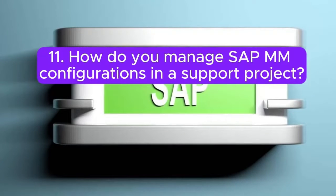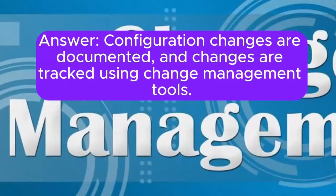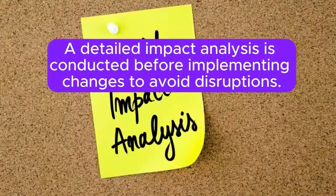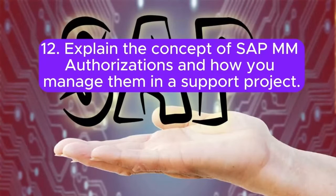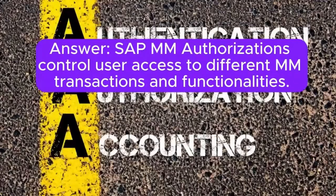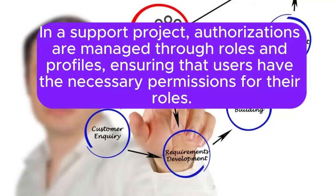Question 11: How do you manage SAP MM configurations in a support project? Configuration changes are documented, and changes are tracked using change management tools. A detailed impact analysis is conducted before implementing changes to avoid disruptions. Question 12: Explain the concept of SAP MM authorizations and how you manage them in a support project. SAP MM authorizations control user access to different MM transactions and functionalities. In a support project, authorizations are managed through roles and profiles, ensuring that users have the necessary permissions for their roles.